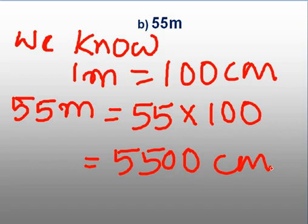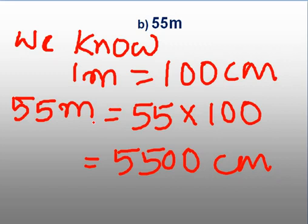Now let us see how we can convert centimeters to meters. Centimeter is a smaller unit of length and that has to be converted into meter, which is the bigger unit of length. So how will we convert a smaller unit to the bigger one? Just now you saw how to convert a bigger unit into a smaller one — meter is a bigger unit and we converted it into the smaller unit, centimeter. And what did we do? We multiplied it by 100.